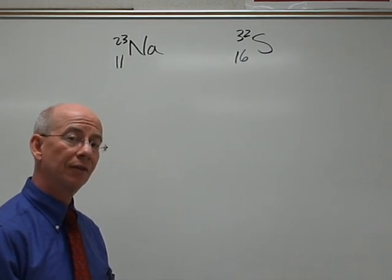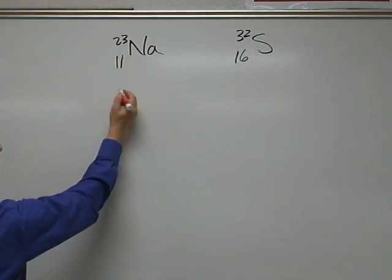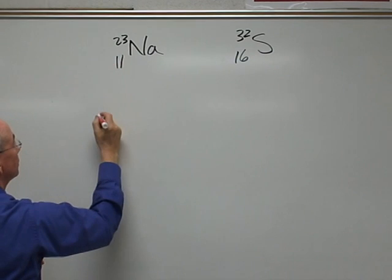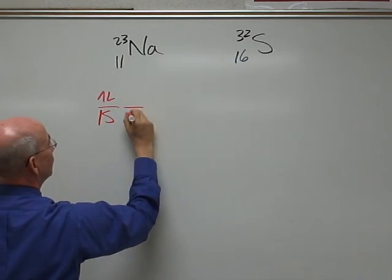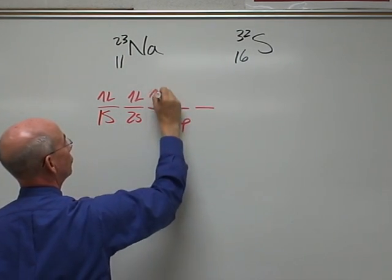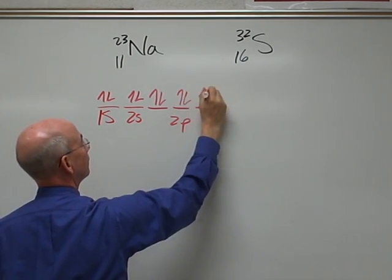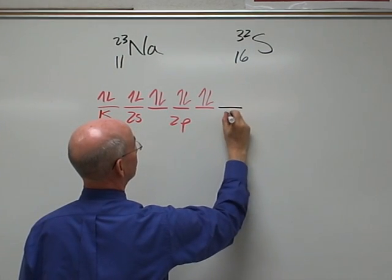Again, we're going to focus on the valence. I'll draw the whole thing, but I want you to understand the valence is all we're interested in. We have 11 electrons, so we have 1s. There's two of them. 2s will have 2. And then we have the 2p's. But what we really care about is this valence right here, the 3s1.